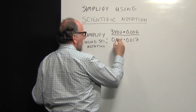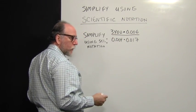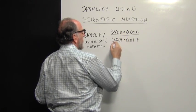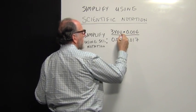And so we have to change each of these decimal numbers into scientific notation. So this has a decimal. 3,400 has a decimal on the right here.